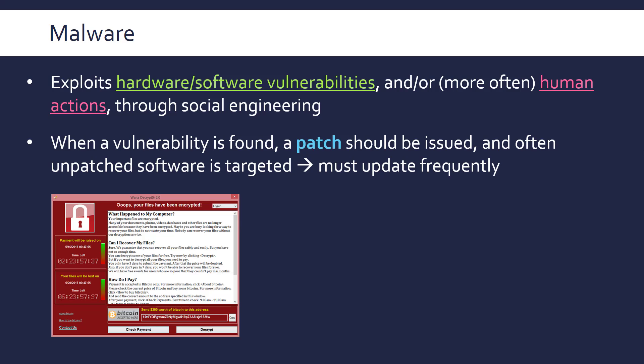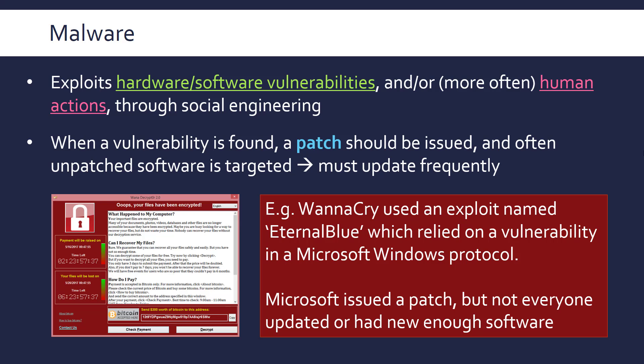A real-world example of this is WannaCry, another ransomware example, which affected lots of countries in 2017 — including the NHS in England, probably most famously. It used a software vulnerability in a Microsoft Windows protocol; the vulnerability was codenamed EternalBlue, and was found by the NSA in America. It was somehow leaked, and as soon as it was leaked, Microsoft issued a patch. But not everyone updated their software immediately, or even had new enough software — older systems like Windows XP didn't have the patch, and the majority of people infected were running Windows 7. The creators, thought to be from North Korea, correctly assumed many people wouldn't update, so they packaged this into a worm which spread very rapidly until a kill switch was activated.